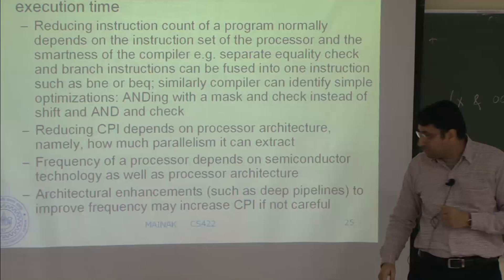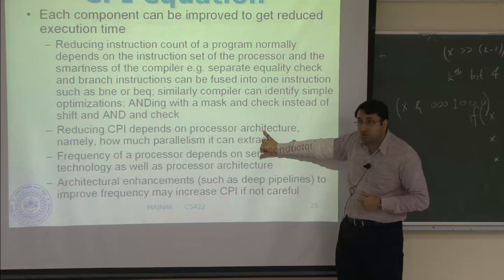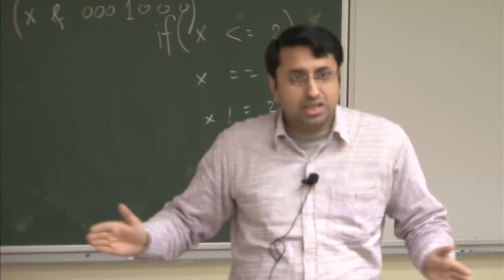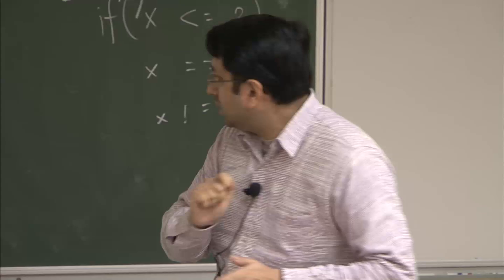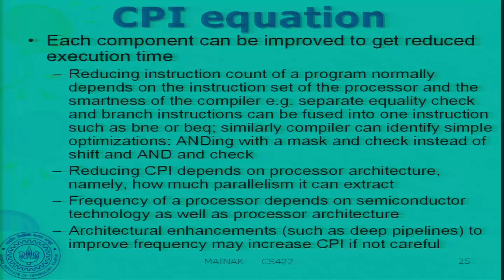Architectural enhancements such as deep pipelines can improve frequency but may affect CPI. You can reduce cycle time by designing a very deep pipeline so that each pipe stage does a very small amount of work, allowing you to run the clock very fast. But this may increase CPI in various ways, which we will discuss when we actually examine what the pipeline stages are doing.